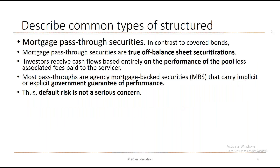In contrast, mortgage pass-through securities are true off-balance-sheet securitization. The entire cash flows are based on the performance of the pool — not guaranteed by the originator as in covered bonds. Cash flows are based on the performance of the pool, less associated fees paid to the servicer. Most pass-throughs are agency mortgage-backed securities that carry implicit or explicit government guarantee of performance. Therefore, default risk is not a serious concern because it is guaranteed by the government.